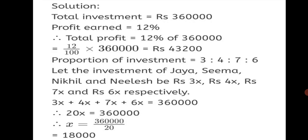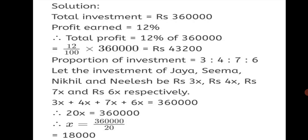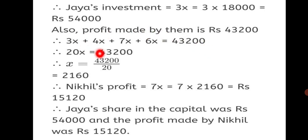20x = Rs. 3,60,000. Therefore x = 3,60,000 ÷ 20 = Rs. 18,000. The question asks for Jaya's actual share in the capital. Jaya's investment = 3x = 3 × 18,000 = Rs. 54,000. Now for the profit equation: 3x + 4x + 7x + 6x = Rs. 43,200. Therefore 20x = Rs. 43,200.